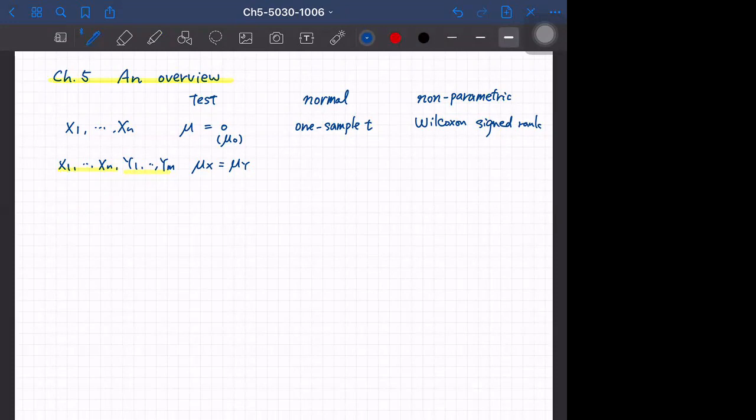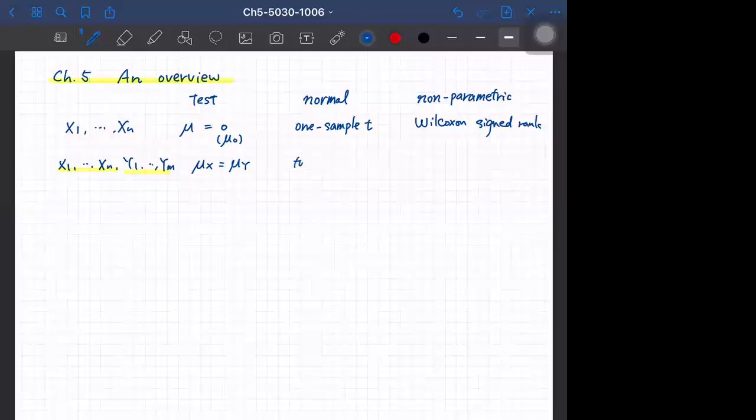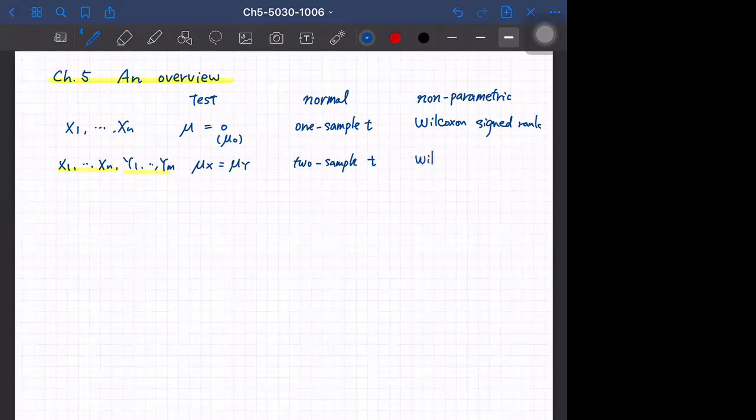In general we can have null hypothesis equal to d but that is not very common. So I just write mu x is equal to mu y. We have the two sample t-test with two versions in section 5.3, and also non-parametric version, which is Mann-Whitney test or Wilcoxon rank sum test.